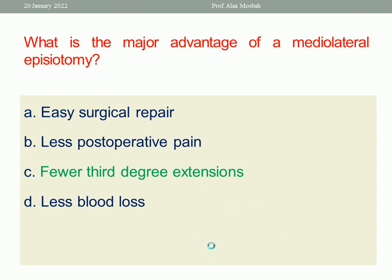Midline episiotomy has other advantages: being easier to repair, less pain, more cosmetic, and less blood loss. But here we are talking about mediolateral episiotomy, which avoids extension to the anal sphincter — hence fewer third-degree extensions. The distractor in the question may come as 'injury to the anal sphincter' instead.